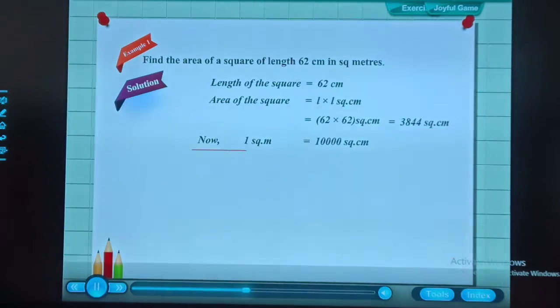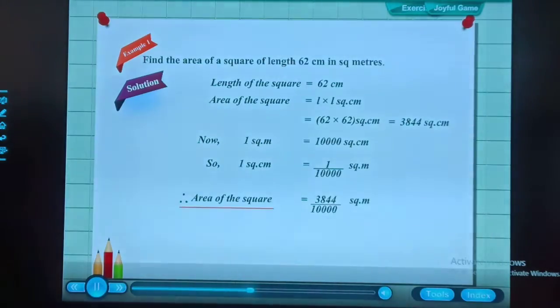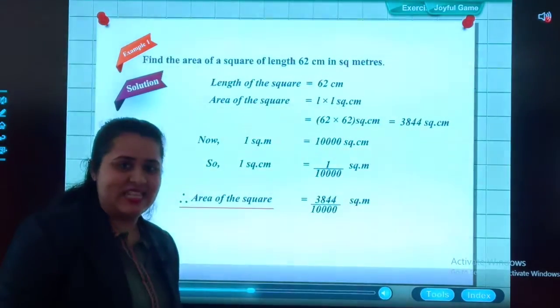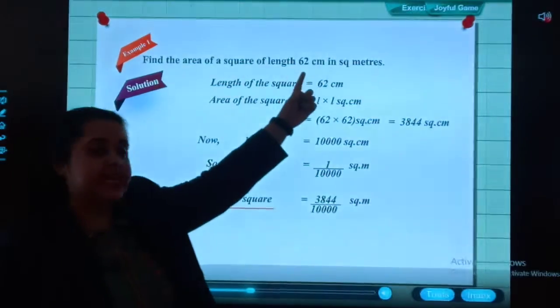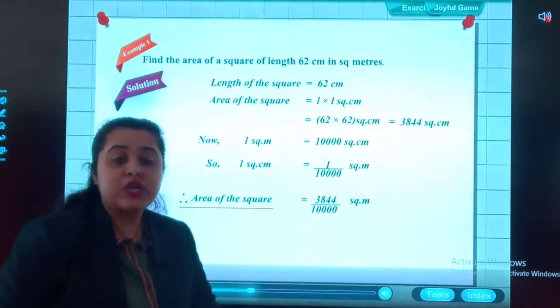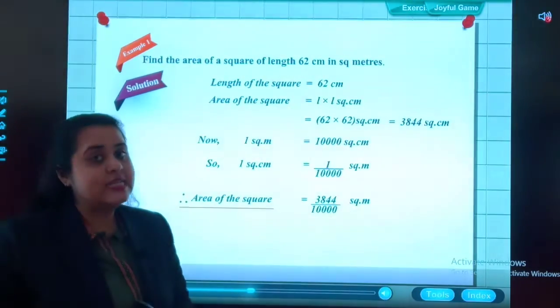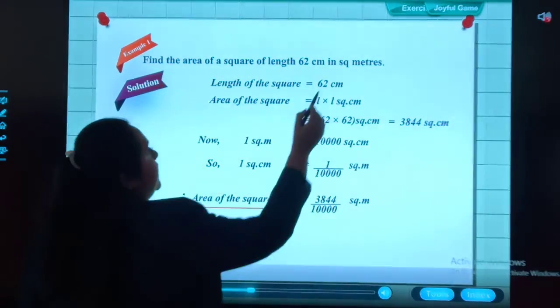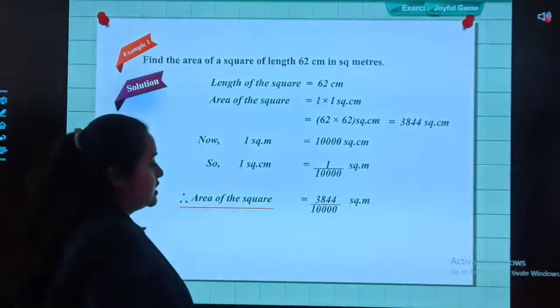Now 1 square meter is equal to 10,000 square centimeters. So 1 square centimeter is equal to 1/10,000 square meters. Therefore, area of the square is equal to 3844/10,000 sq m. So students, you observed, the length is in centimeter, but in the question, we have to find the answer in square meters.